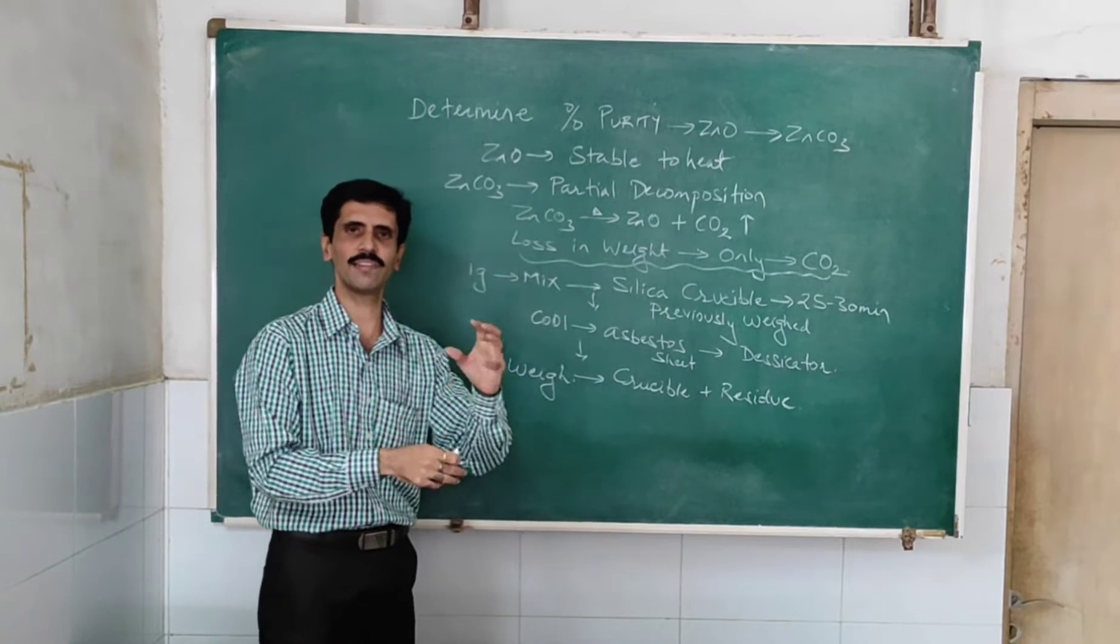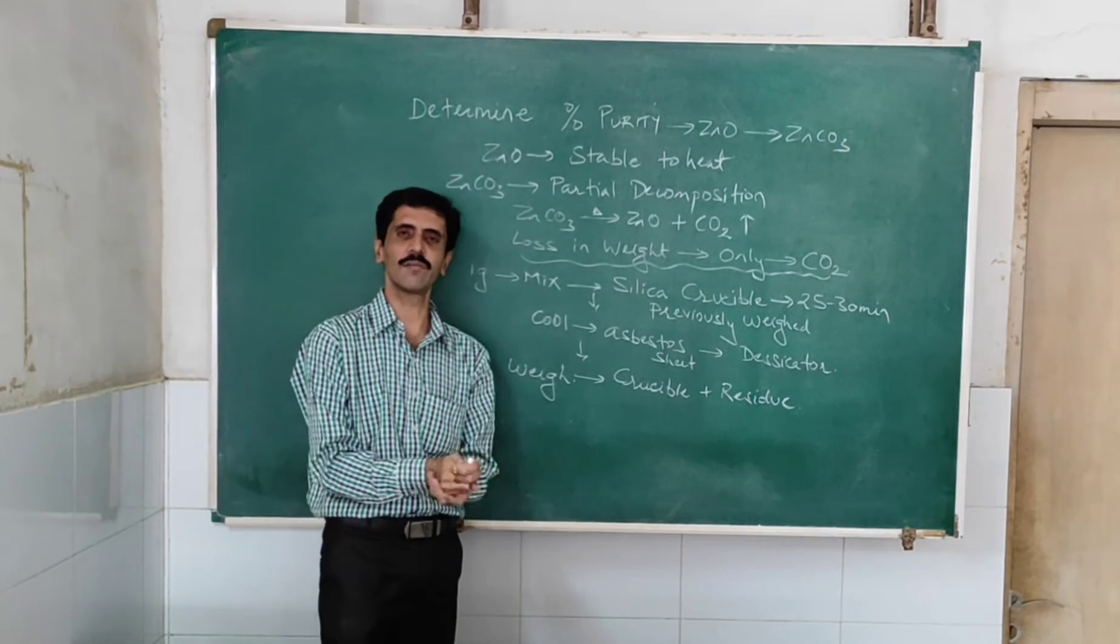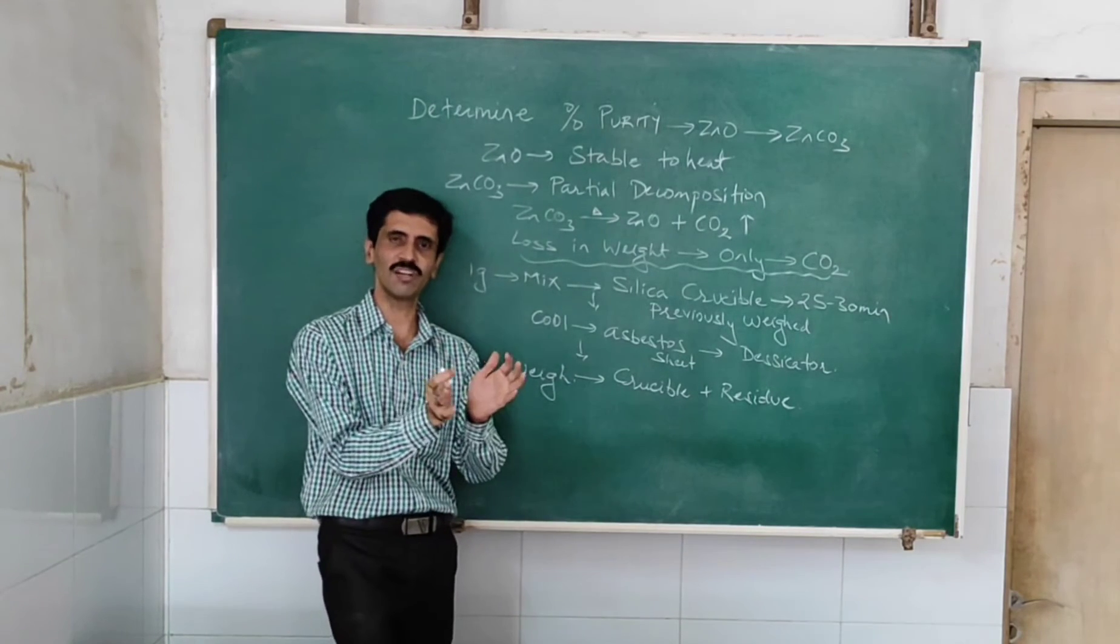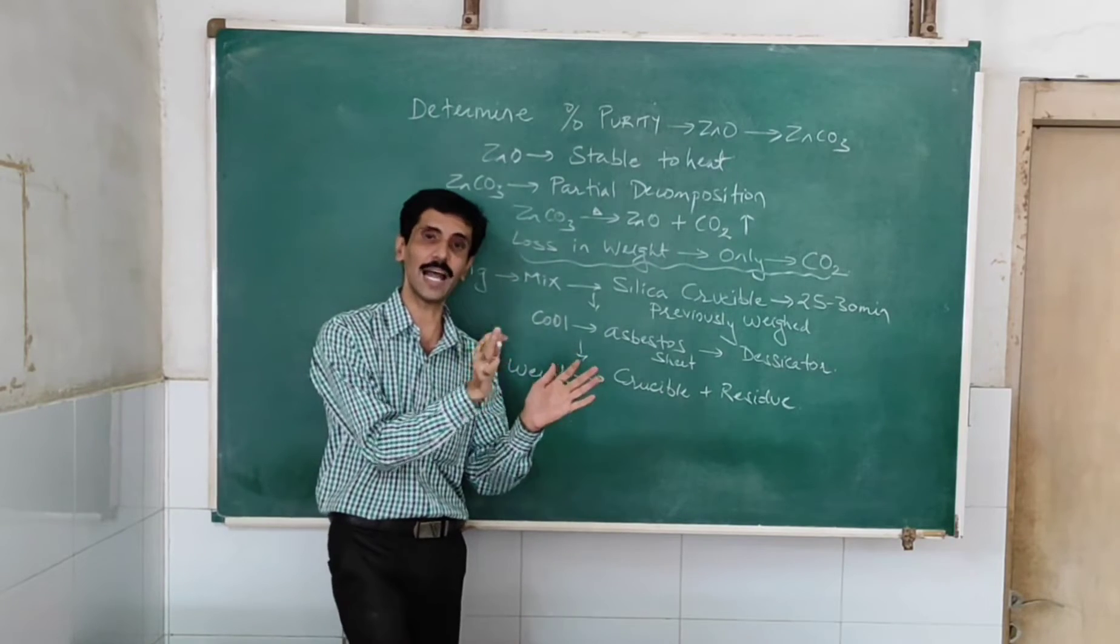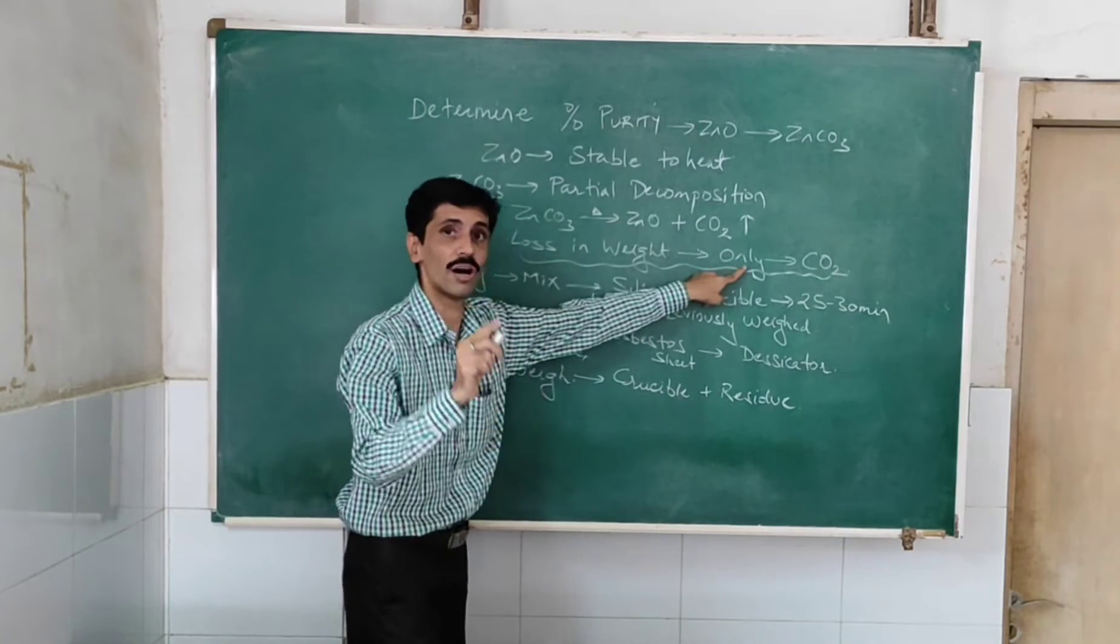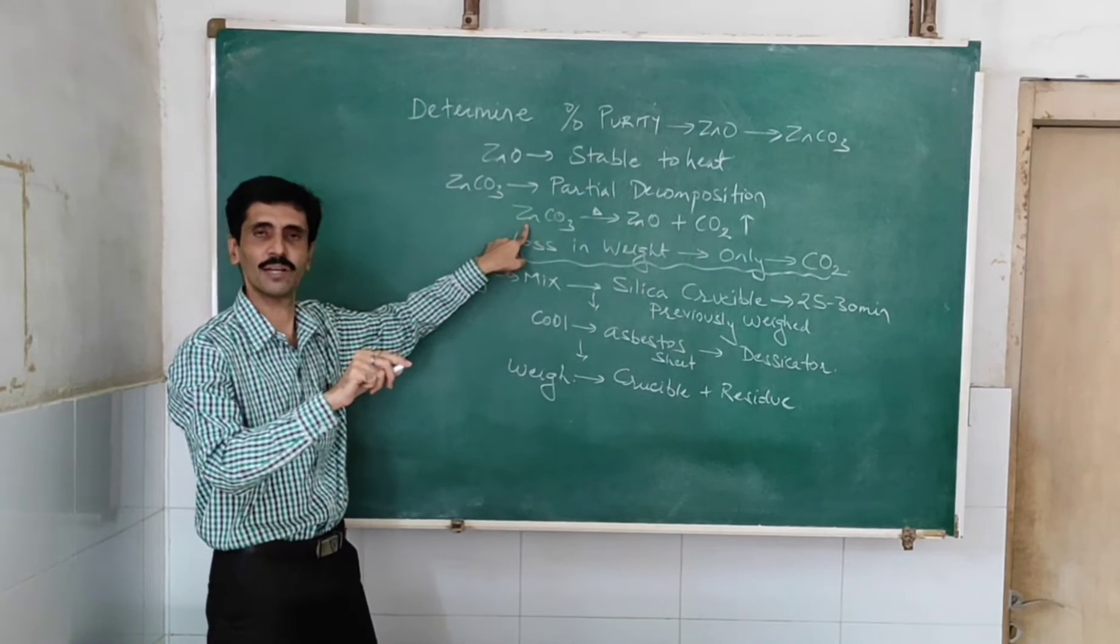On the basis of this, we will do some calculations. And accordingly, we will find out the amount of zinc carbonate, because carbon dioxide was a component of zinc carbonate.